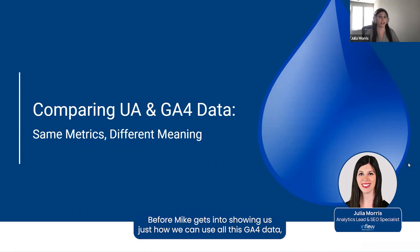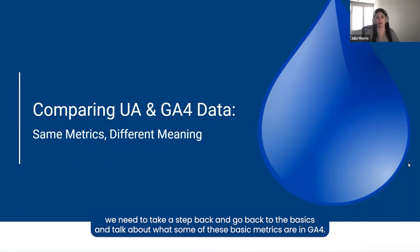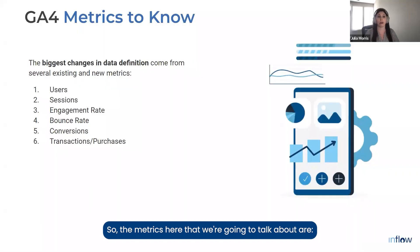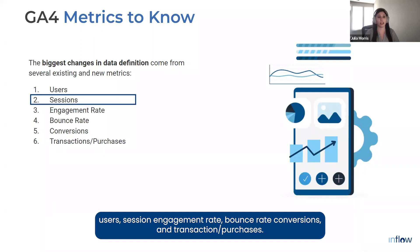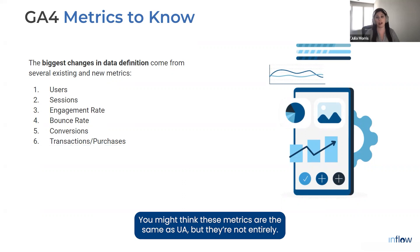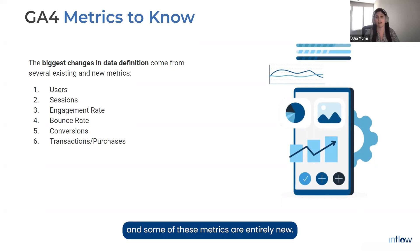Before Mike gets into showing us just how we can use all this GA4 data, we need to take a step back and go back to the basics and talk about what some of these basic metrics are in GA4. The metrics we're going to talk about are users, sessions, engagement rate, bounce rate, conversions, and transactions slash purchases. You might think these metrics are the same as UA, but they're not entirely. There are some different data definitions, different collection metrics, and some of these metrics are entirely new.